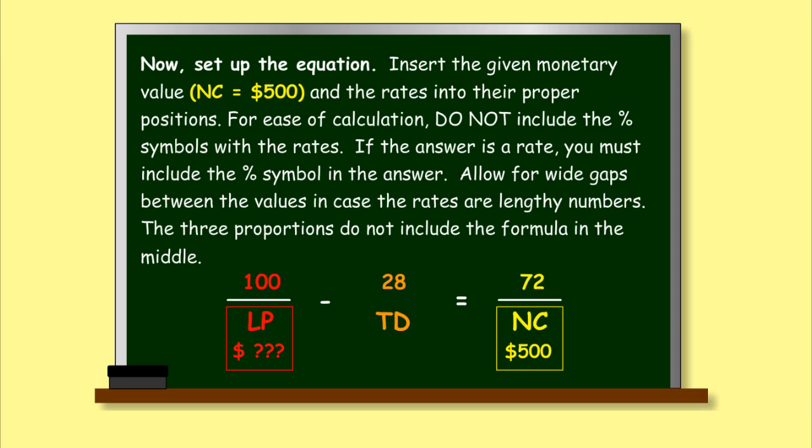Now set up the equation. Insert the given monetary value, NC equals $500, and the rates into their proper positions. For ease of calculation, do not include the percent symbols with the rates. If the answer is a rate, you must include the percent symbol in the answer. Allow for wide gaps between the values in case the rates are lengthy numbers. The three proportions do not include the formula in the middle.